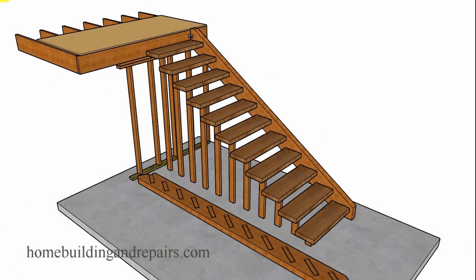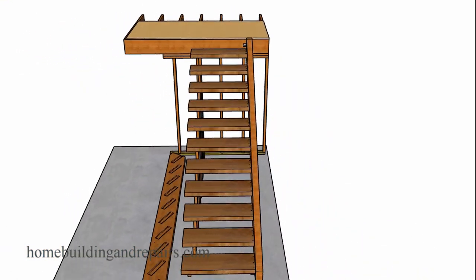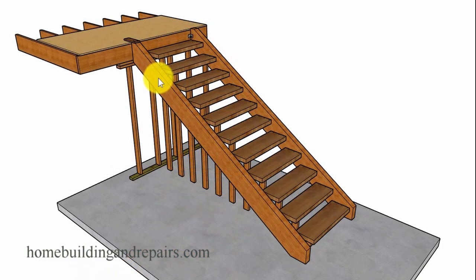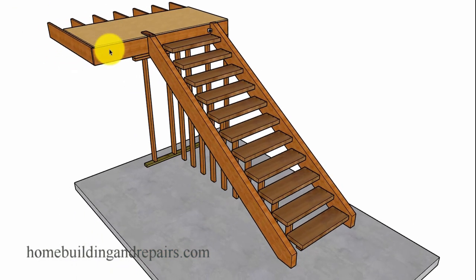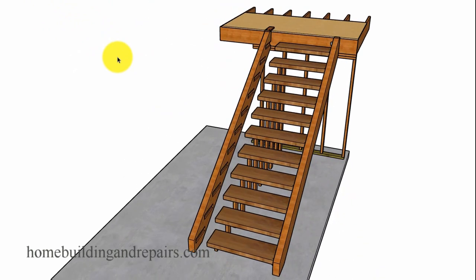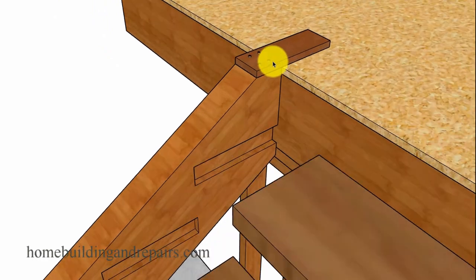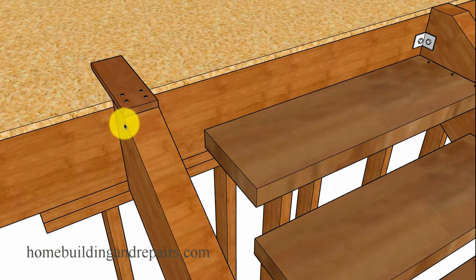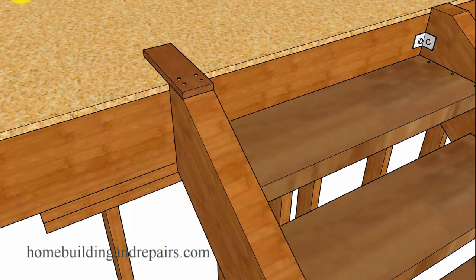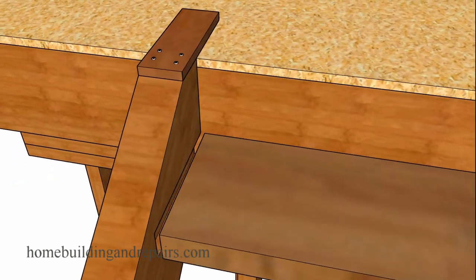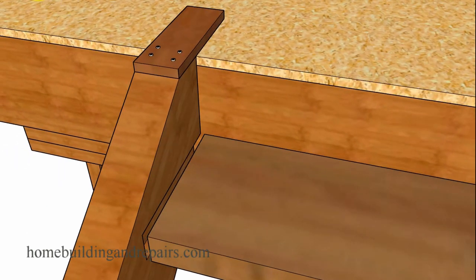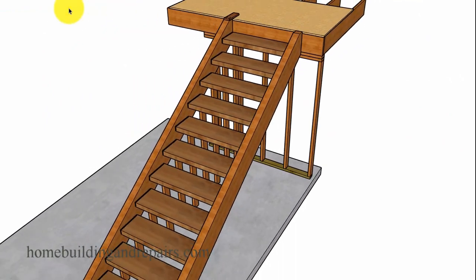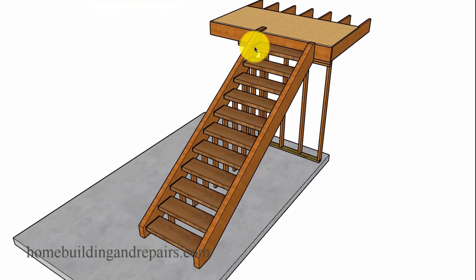After you have installed all of your treads, it should look something like this. Next up on the list will be to get the other stringer into place here. And I like to have a board attached to the top. Something like this to allow me to slide the stringer back and forth. Next step will be to slide it as close as we can to the treads.